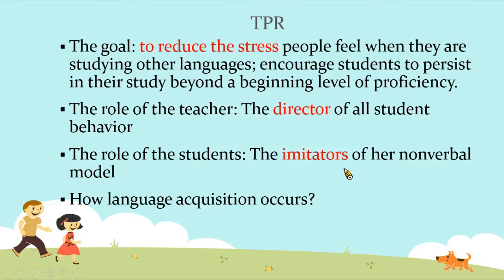The goal of TPR is to reduce the stress people feel when studying other languages, and to encourage students to persist in their study beyond a beginning level of proficiency. The role of the teacher is to be the director of all students' behavior, while the role of students is to be imitators of the teacher's non-verbal model. This is how the method believes language acquisition occurs.